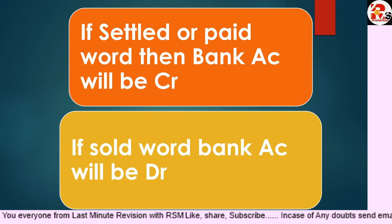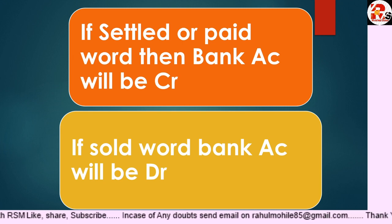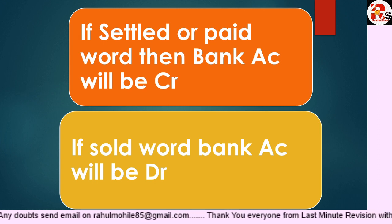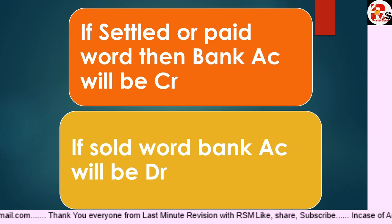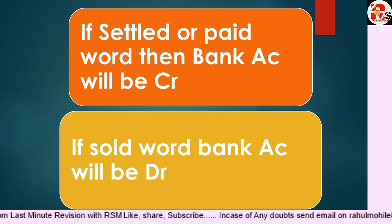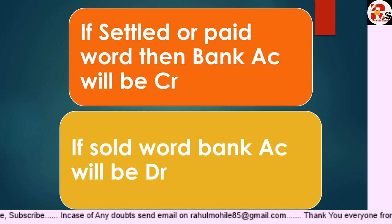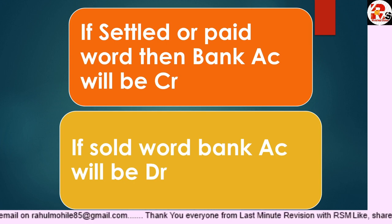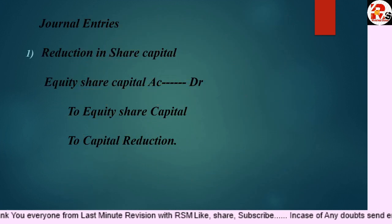Whenever we sell any asset, which is called 'sold' — for example, furniture sold — money will come to us. Cash is the same as money, so whenever you sell something, Bank Account is always debited. To summarize: whenever the word 'settled' or 'paid' is given, Bank Account is always credited; and whenever the word 'sold' is given, Bank Account will always be debited.